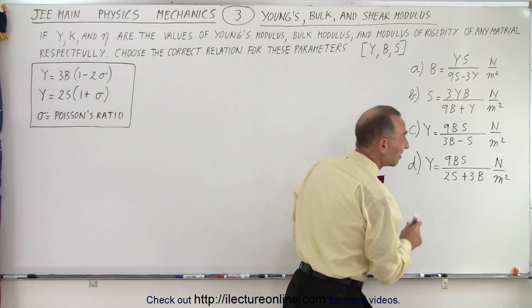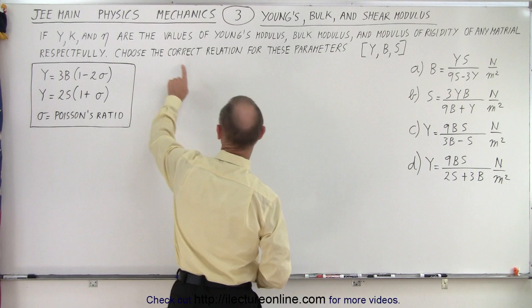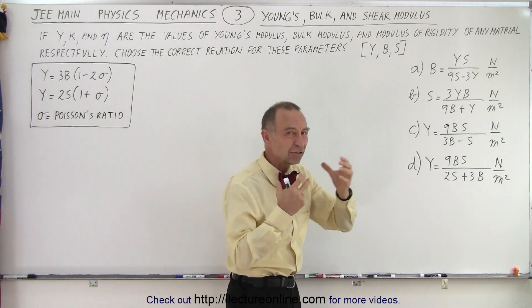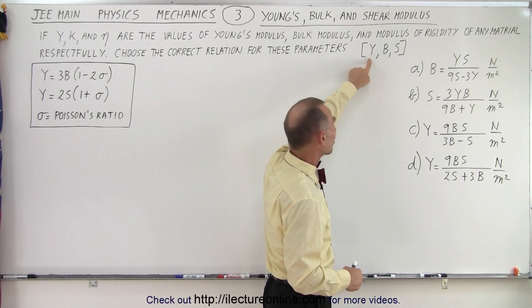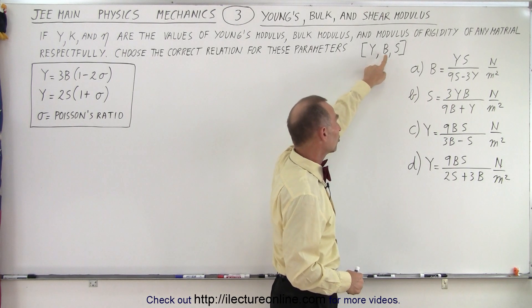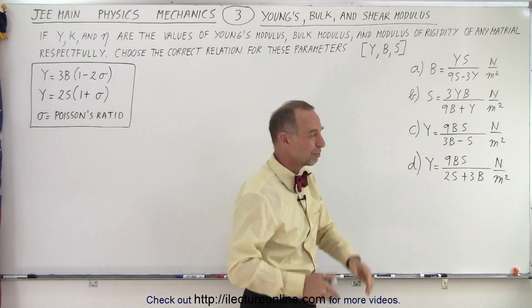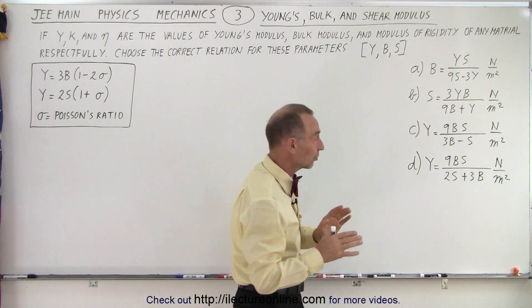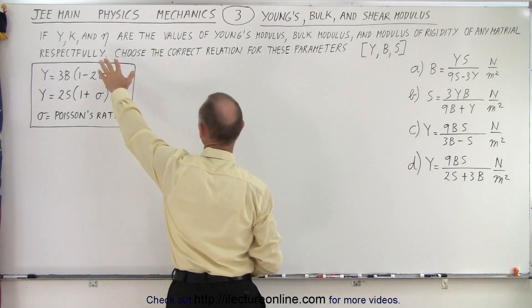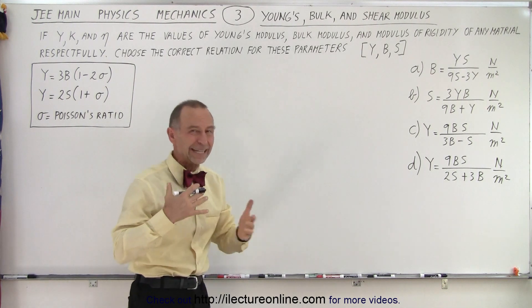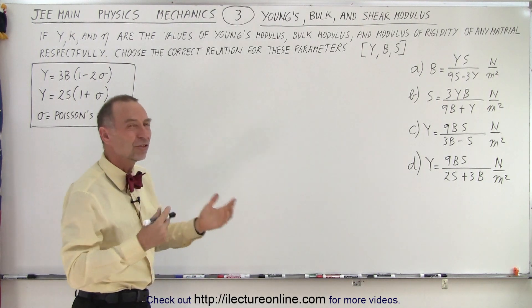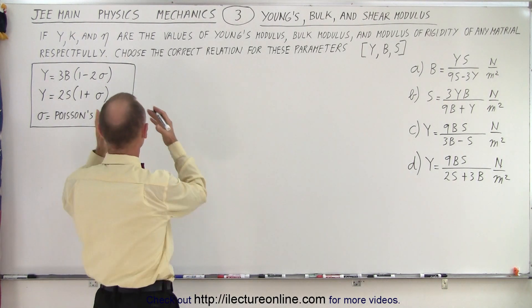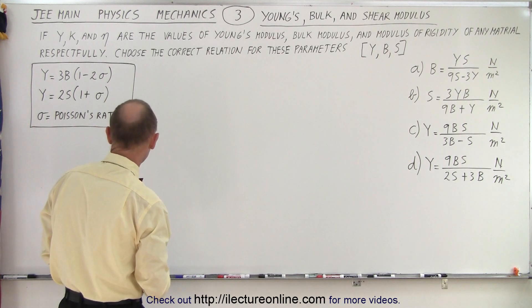Now, what I've done is, instead of using the symbols that they gave us, I've used the symbols that makes it easier to keep track of it. Y for Young's modulus, B for bulk modulus, and S for shear modulus, because that just makes it easier. And now, I've written the answers with those particular symbols. Of course, in the test, they used those symbols, and I find that very confusing in a way, unless you're typically used to using those particular symbols.